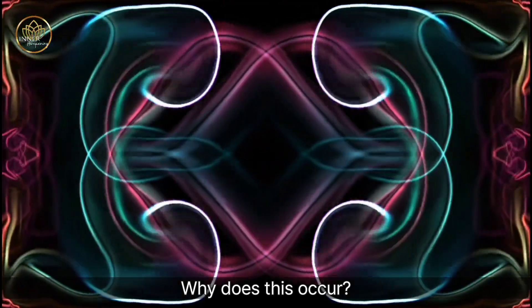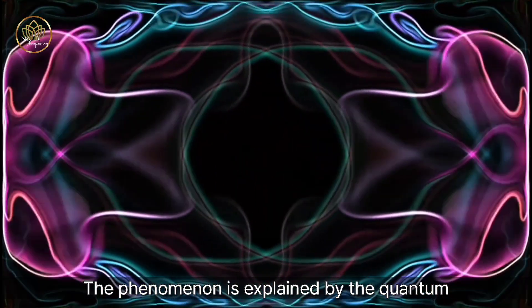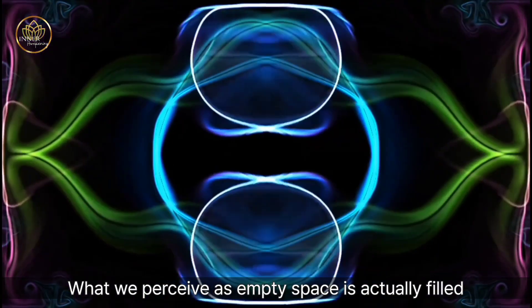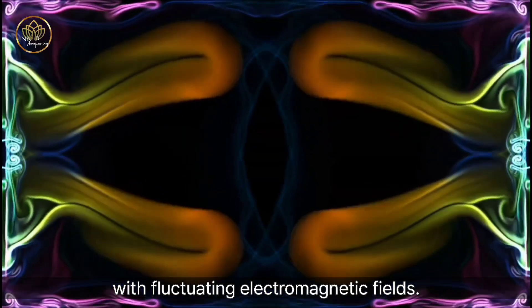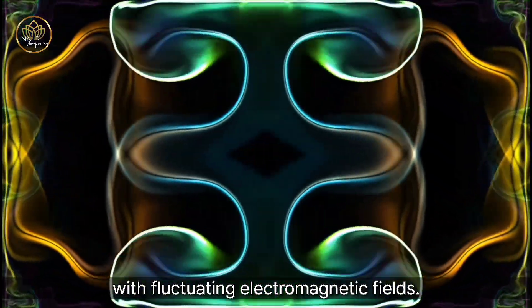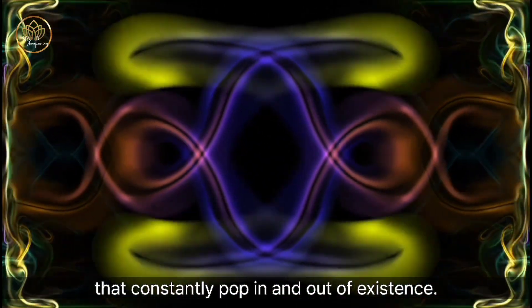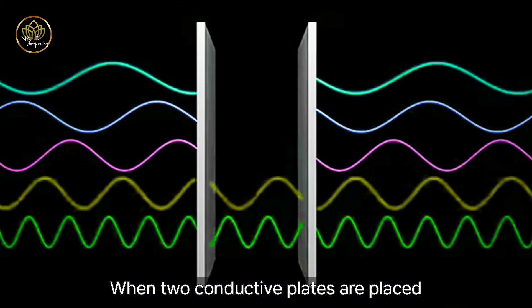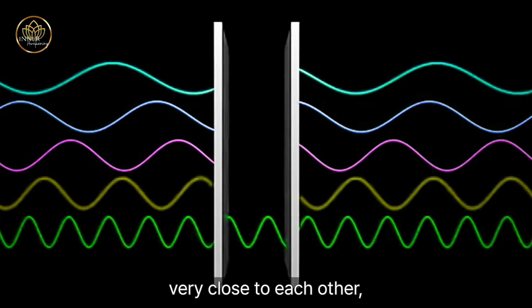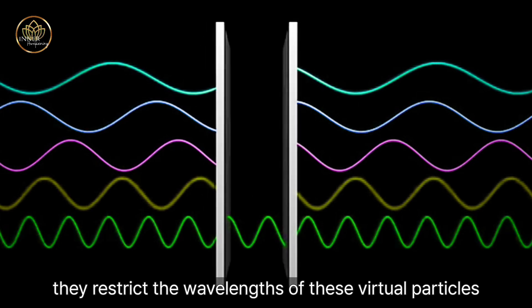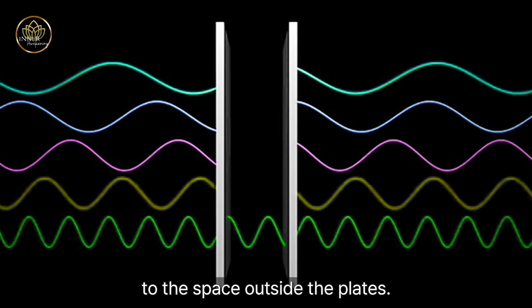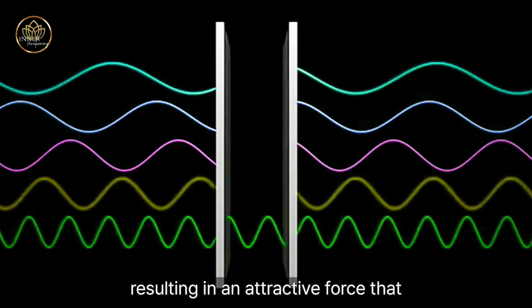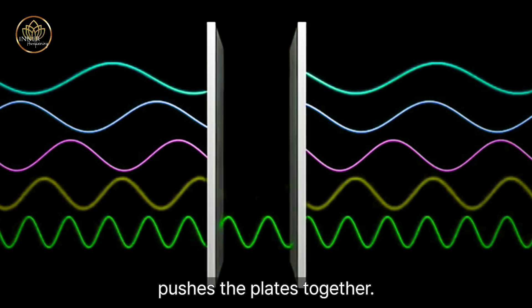Why does this occur? The phenomenon is explained by the quantum properties of the vacuum itself. What we perceive as empty space is actually filled with fluctuating electromagnetic fields. These fields create a sea of virtual particles that constantly pop in and out of existence. When two conductive plates are placed very close to each other, they restrict the wavelengths of these virtual particles that can exist between them. This imbalance creates a pressure difference, resulting in an attractive force.